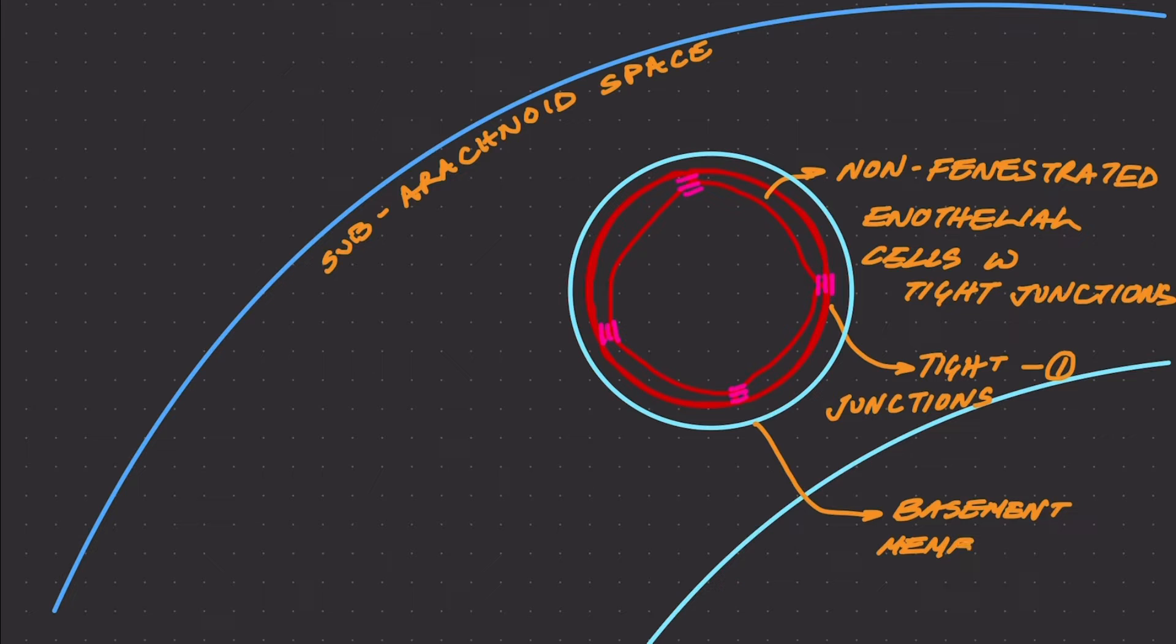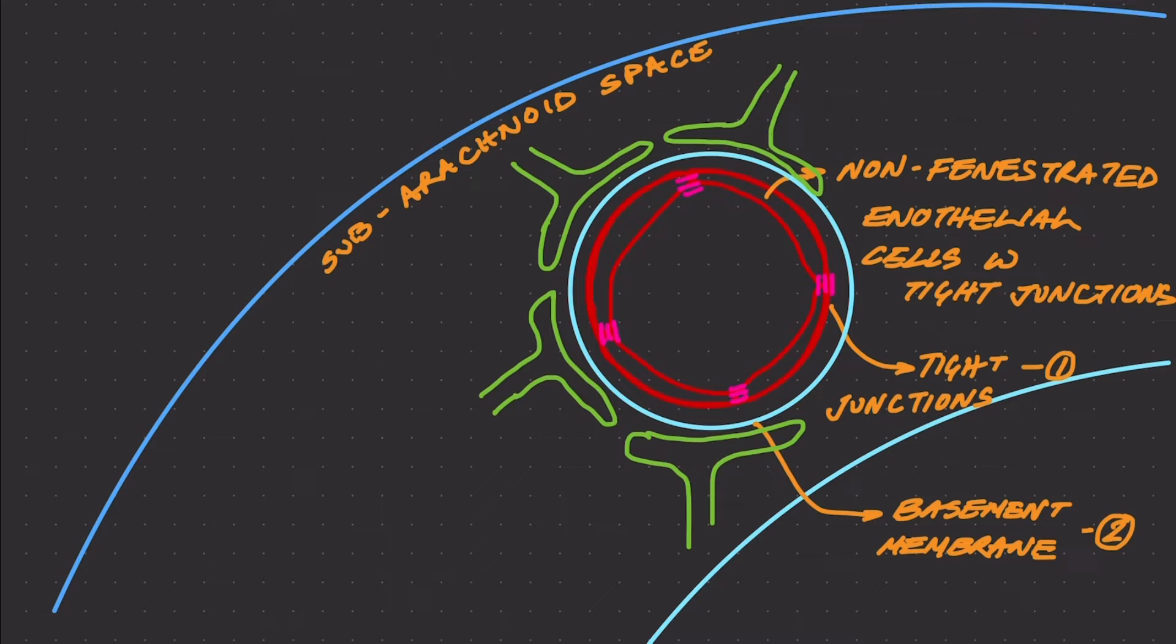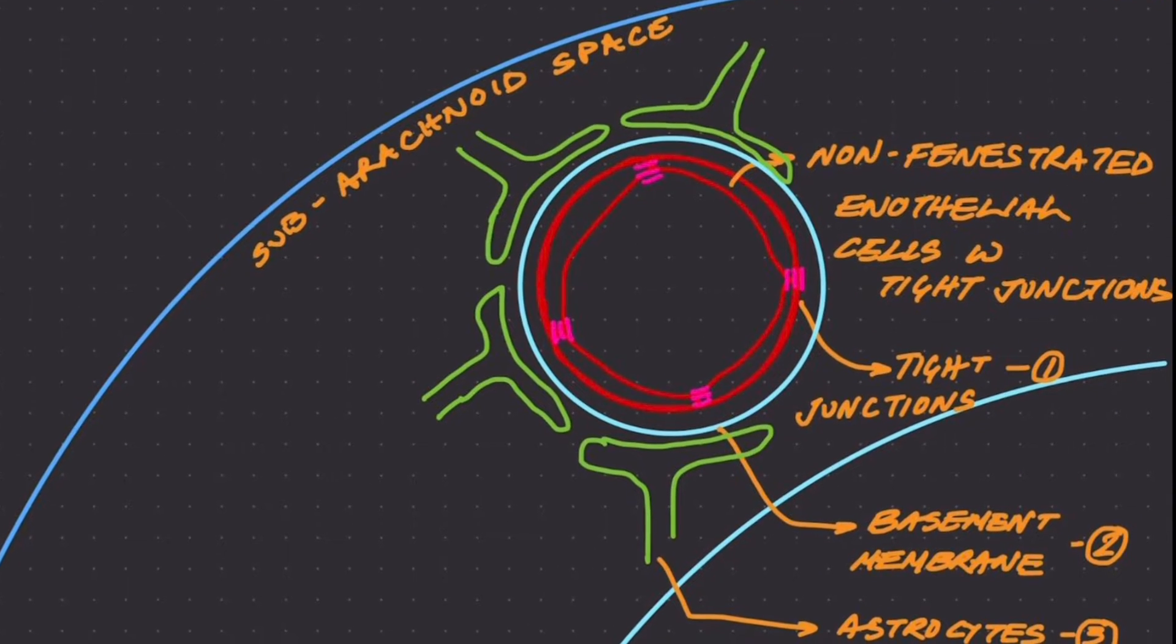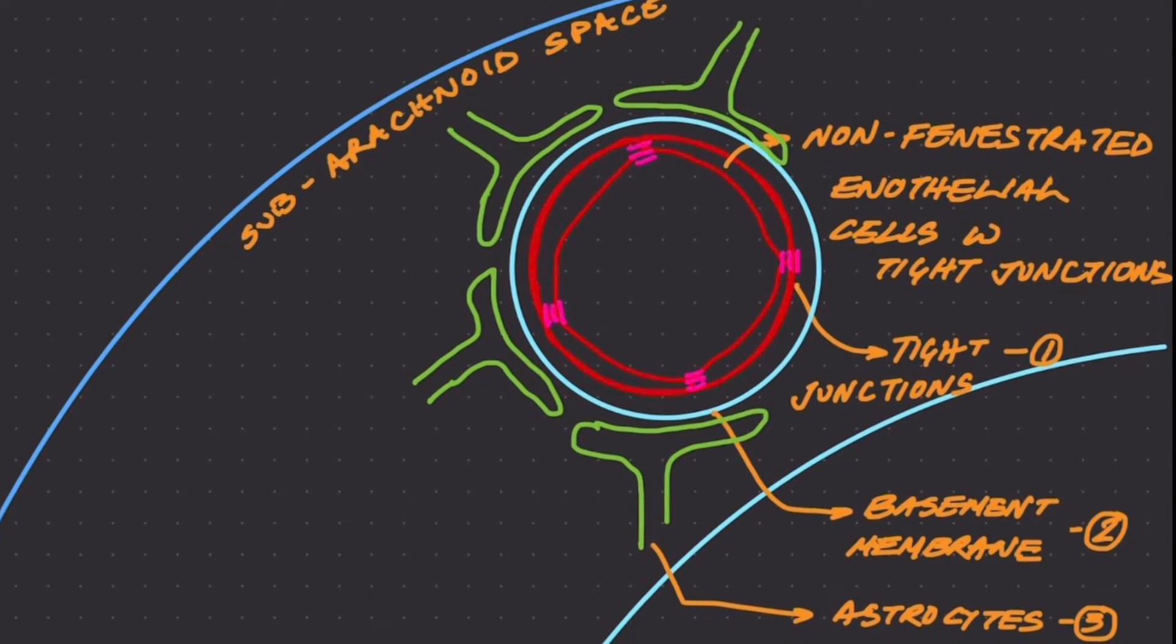And then finally, there are the astrocytes. Astrocytes are glial cells - a type of glial cell. There are other glial cells like Schwann cells, oligodendrocytes, and microglia. Just like them, astrocytes have projections or foot processes that project all the way throughout the blood vessel and maintain a third layer of support of the blood-brain barrier.